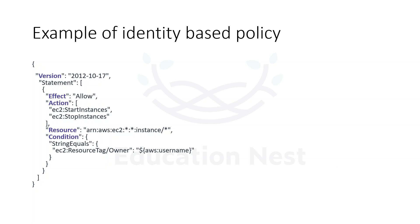The next topic is an example of identity-based policies. Policies are always in JSON document format. This is an example of an AWS managed policy created on 17th October 2012, under which we have a statement that defines what this policy is doing. You can have multiple statements. Under 'effect', you can either have allow or deny. This policy is allowing some actions — specifically, starting and stopping EC2 instances.